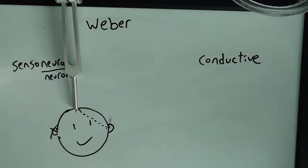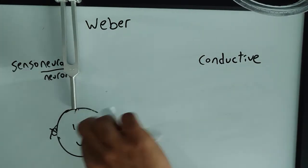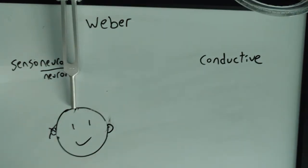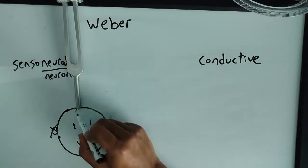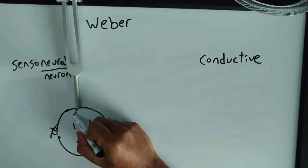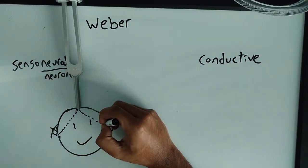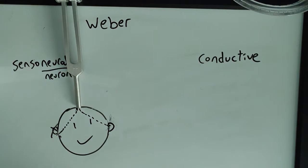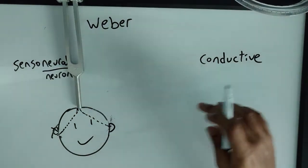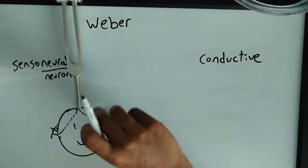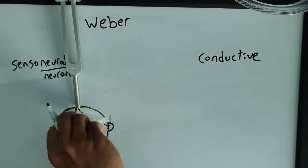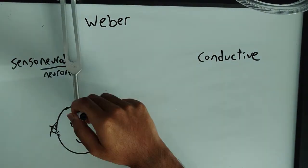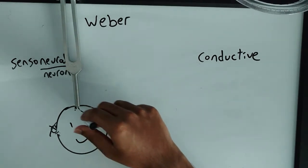So a patient comes in with right-sided hearing loss and you do the Weber test. You put it right on top of their head — there's a neuron going to the left ear and the right ear. Since he has right-sided hearing loss, the patient says he doesn't feel it in the right ear, the bad ear. He feels it in the left ear, the good ear. That means he's having sensorineural hearing loss — the sound lateralizes to the opposite, good ear.